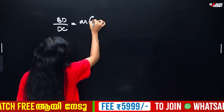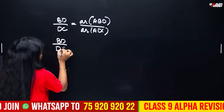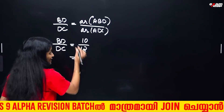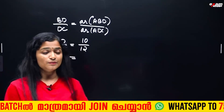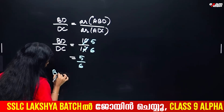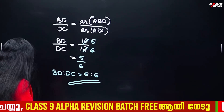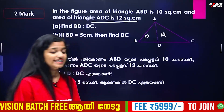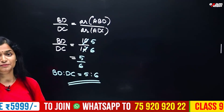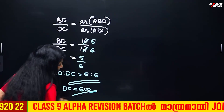The ratio is 10 to 12, which simplifies to 5 by 6. So BD to DC equals 5 to 6. If BD is equal to 5 cm, then find DC. Since BD to DC is 5 to 6, DC is equal to 6 cm.